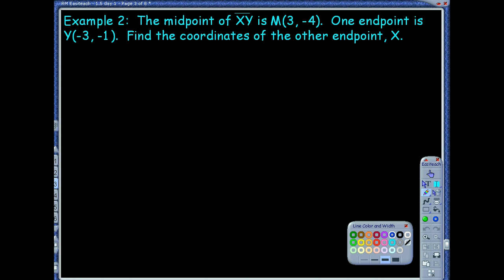So the next one, they tell us the midpoint of XY is 3, -4. Notice here, they're not giving us the endpoint. They're giving us the midpoint. Then they tell us that one endpoint is the Y value of -3, -1. We're supposed to find the coordinates of the other endpoint. Thinking about this one, this is a little different. I'm not just averaging my x's and averaging my y's because we already know what the average is. We just don't know what the other coordinates are going to be for our endpoint.